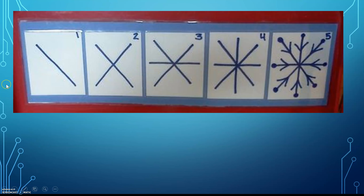Here's a step-by-step guide on how to create a snowflake. First, you draw a diagonal line in step one. Step two, you make two diagonal lines to make an X. Step three, you have the X with a horizontal line that goes across the X.